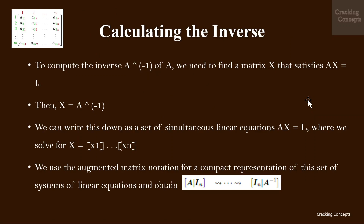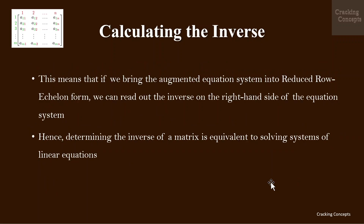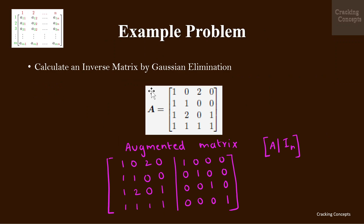Now we'll see how to calculate the inverse. To compute the inverse of A we need to find a matrix X satisfying AX = I, then X = A⁻¹. We write this as a set of simultaneous linear equations and use augmented matrix notation for a compact representation, obtaining [A | I], which is transformed into [I | A⁻¹]. This means that if we bring the augmented system into reduced row echelon form, we can read out the inverse on the right-hand side. Hence, determining the inverse of a matrix is equivalent to solving systems of linear equations.